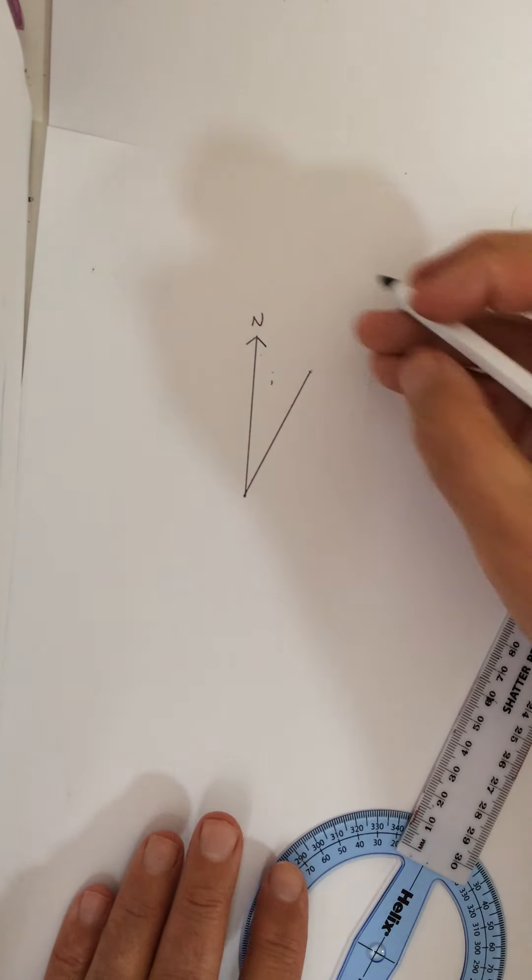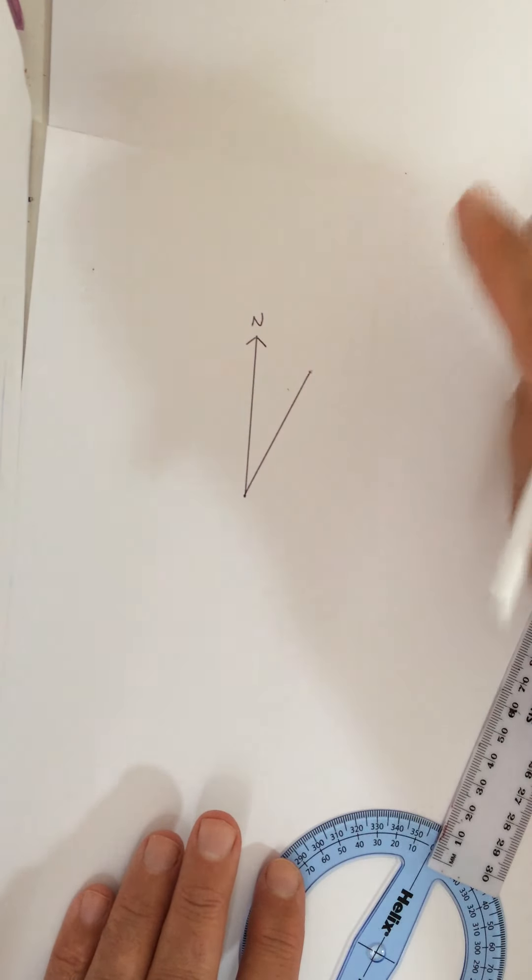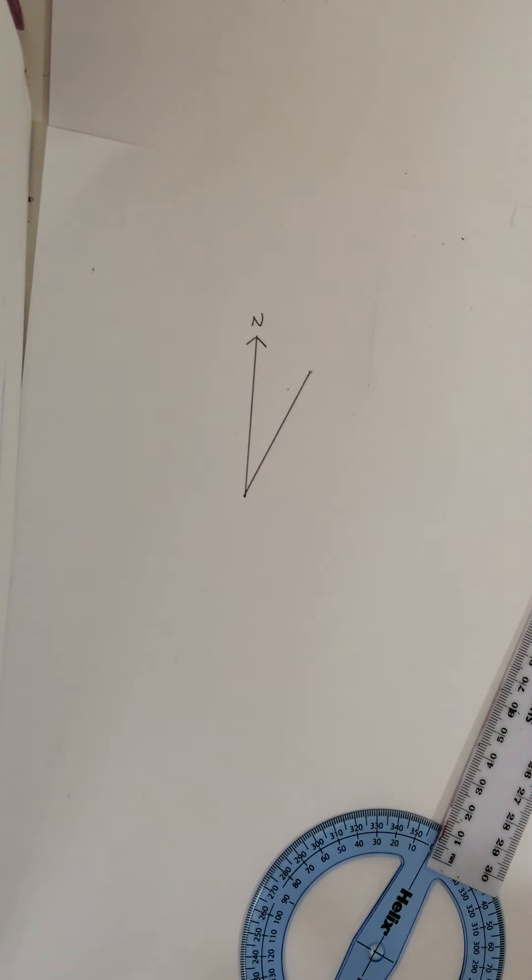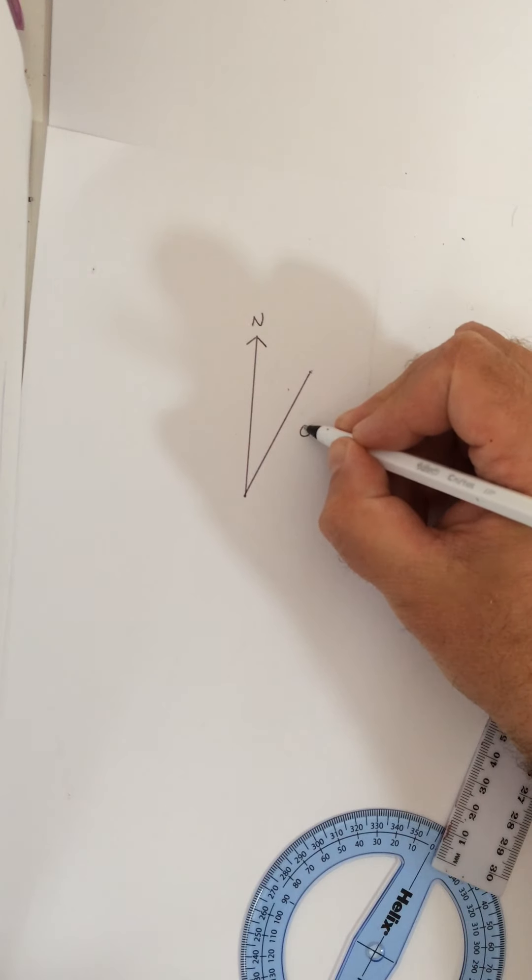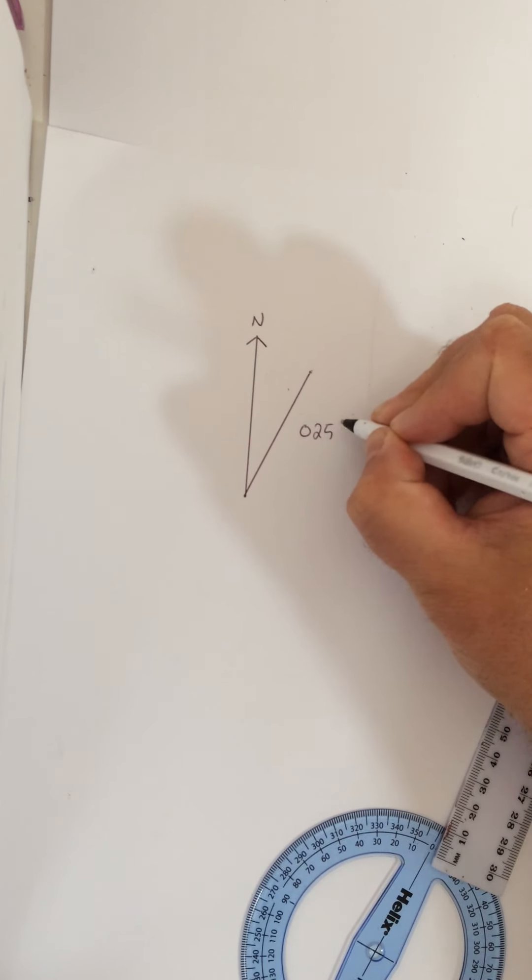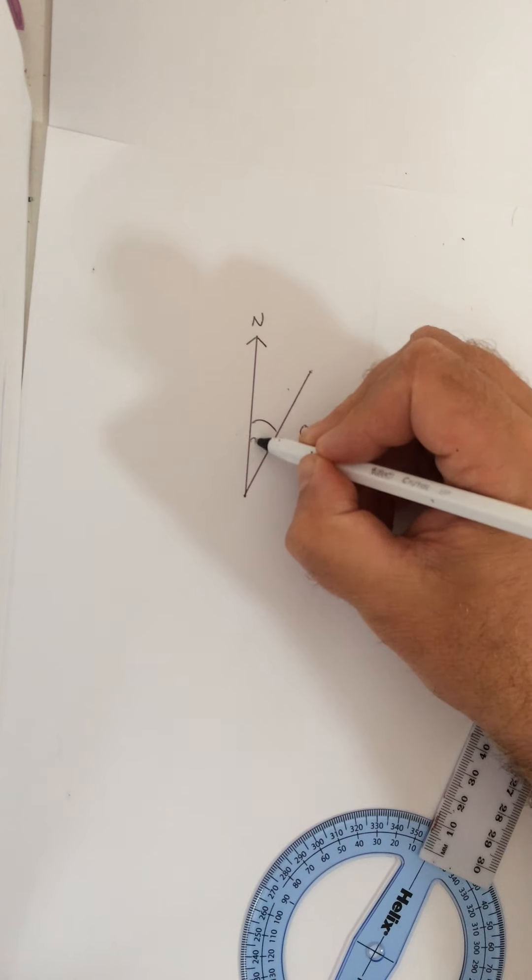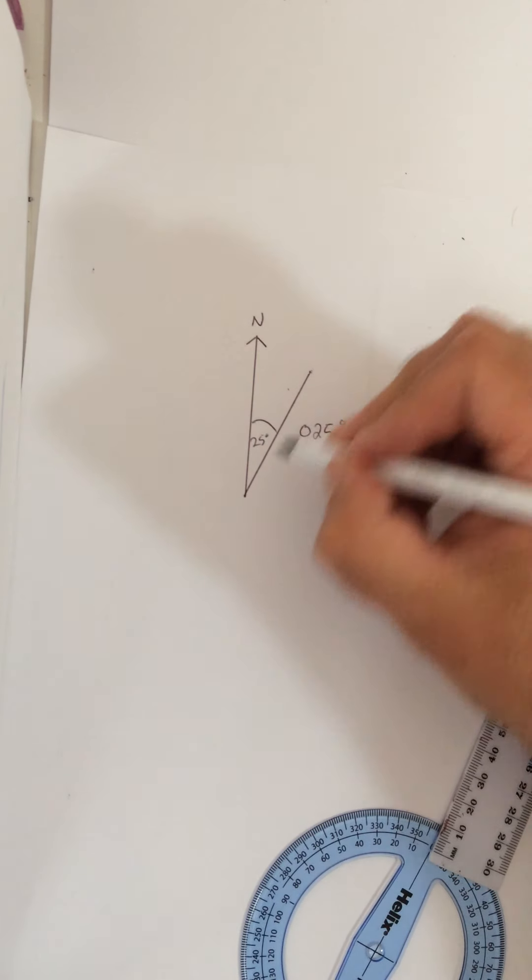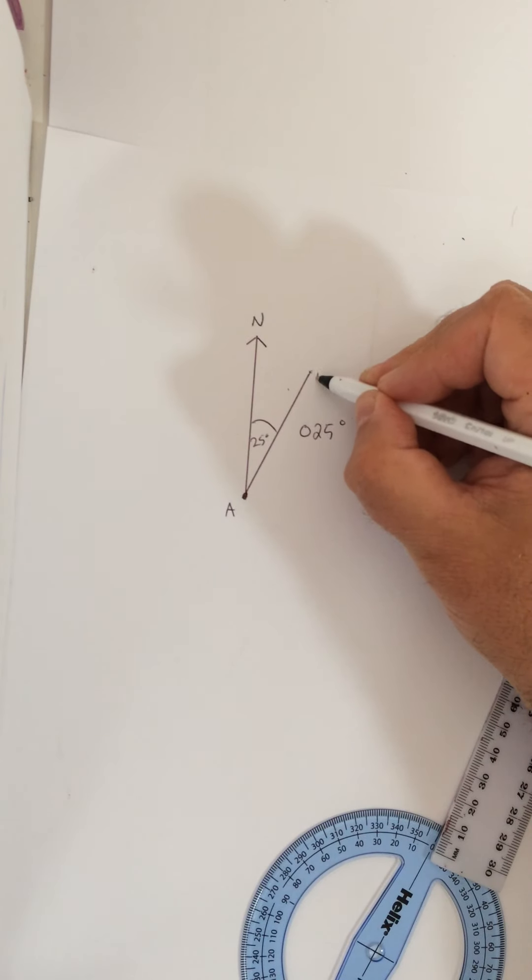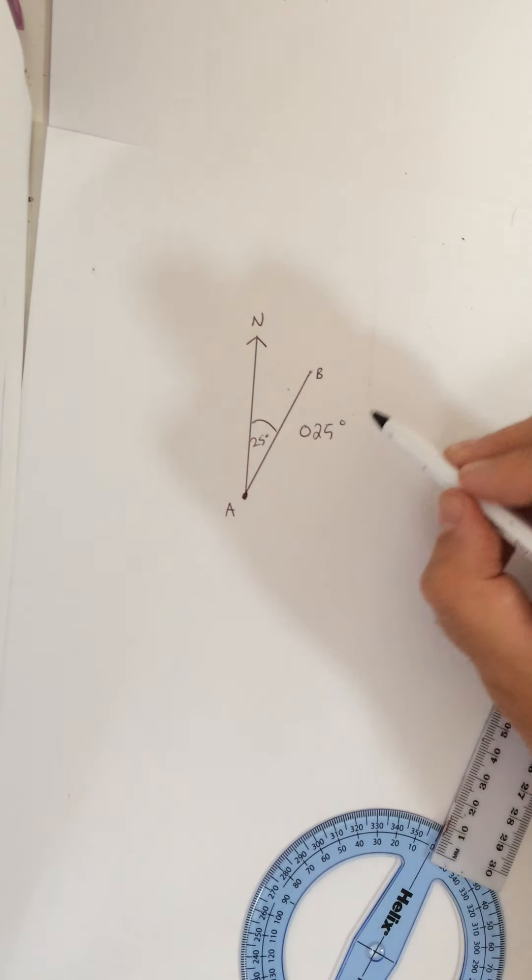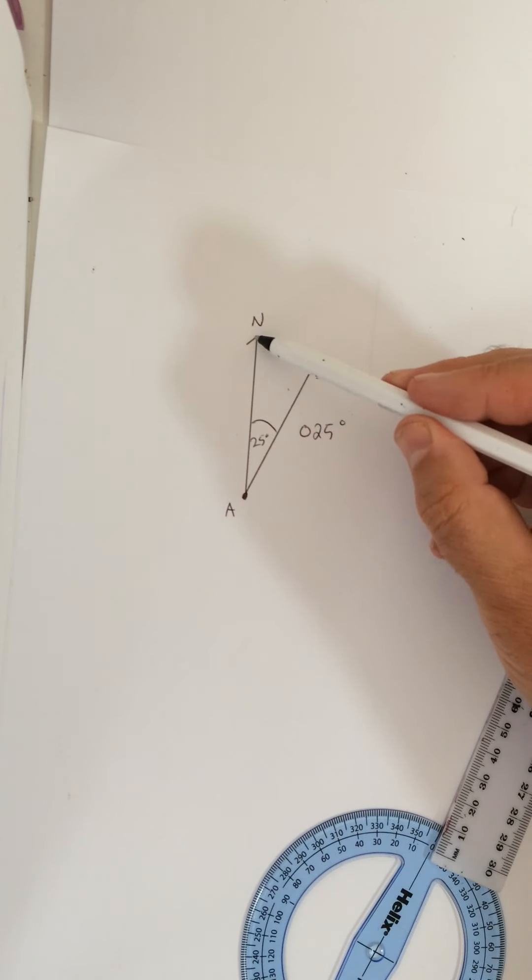So this is a bearing of 25 degrees. And as this statement says, a bearing is always written using three digits. This would be a bearing of 025 degrees, because this is a 25 degree angle. So from point A here to point B, the bearing is 025 degrees, because it's always taken from the north and in a clockwise direction.